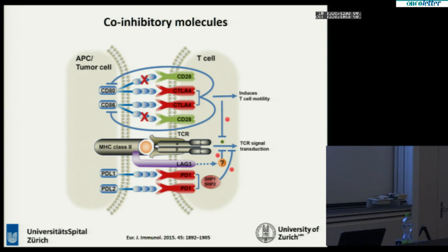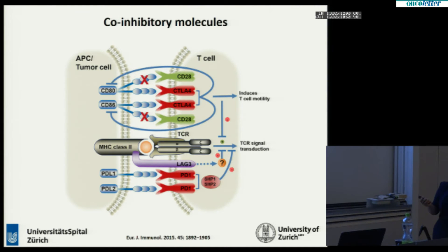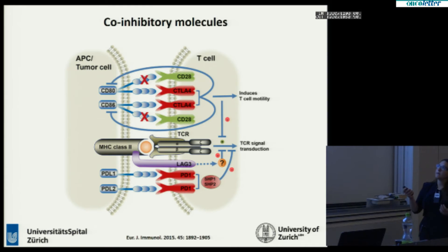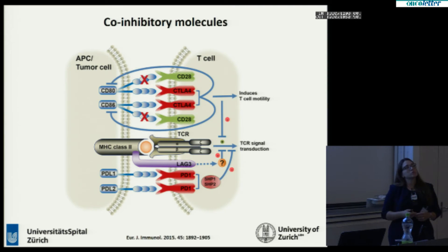First of all, CTLA4. CTLA4 is a homolog of CD28, and therefore it competes with CD28 to bind to the B7 molecules. Then I will talk about PD1, with ligands PDL1 and PDL2, that directly has activity at the T cell receptor. Third, I would like to mention LAG3 as an inhibitory molecule, not only because it has a completely different function by blocking MHC class 2, but also because we will soon start a clinical trial in the Cancer Center Zurich with dermatology and oncology for different tumors using LAG3 antibodies.